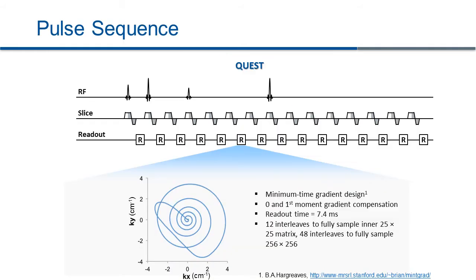We implemented this 4-RF QUEST block in a Siemens scanner. For this QUEST sequence, we used conventional unbalanced slice selection gradients to achieve the dephasing moment between the RF pulses, and we used spiral trajectories to acquire these high-order echoes. The spiral readout gradients are 0th and 1st moment compensated. The readout time is 7.4 milliseconds. For this particular study, the spiral requires 12 interleaves to fully sample the inner 25×25 matrix and 48 interleaves to fully sample the 256×256 matrix size.